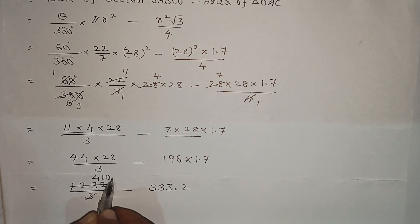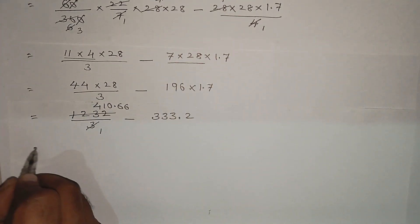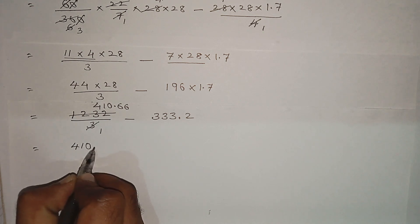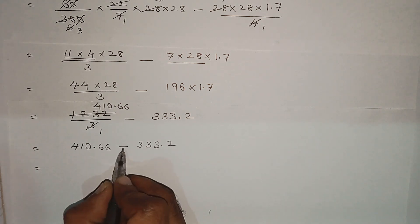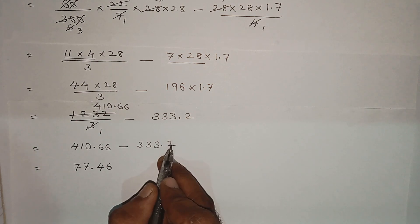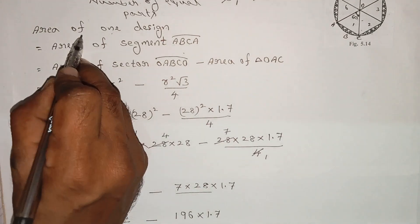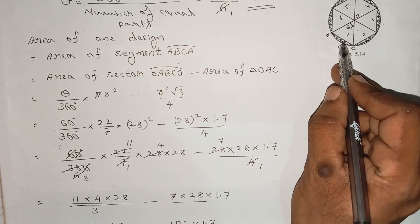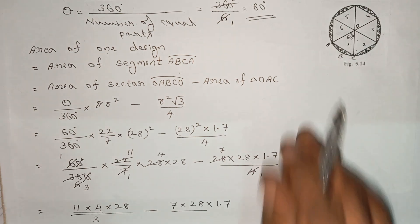1232 divided by 3 equals 410.66, minus 333.2, gives 77.46. So the area of one design is 77.46 centimetres squared.